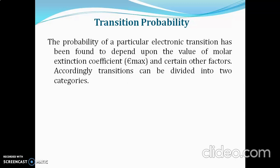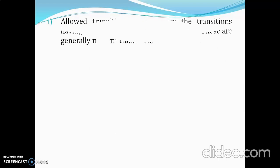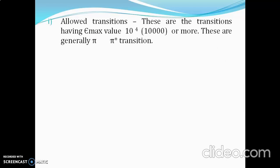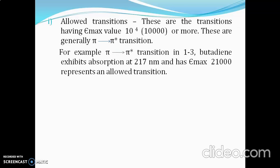According to Emax value, transitions are classified as allowed or forbidden. Allowed transitions have an Emax value of 10,000 or more — generally the pi to pi anti-bonding transition. For example, the pi to pi anti-bonding transition in 1,3-butadiene occurs at 270 nm with an Emax of 21,000, making it an allowed transition.